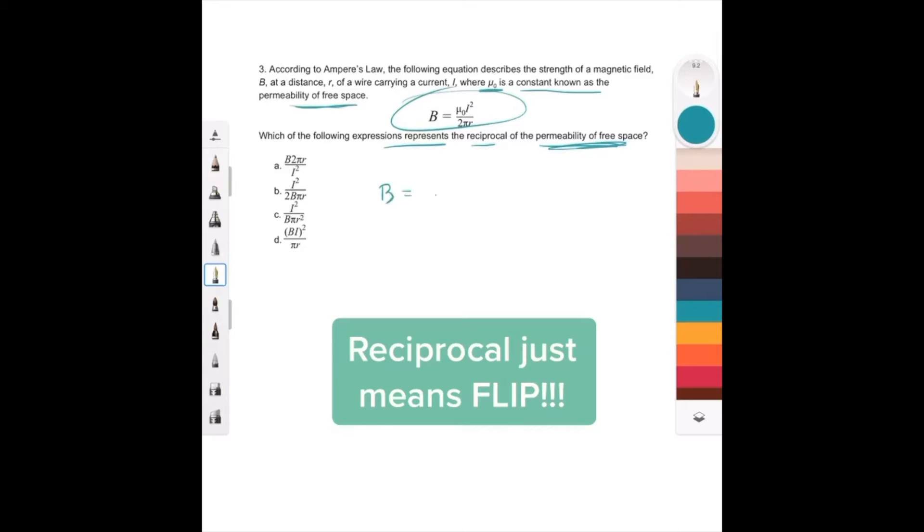B equals, that symbol is called mu, i squared over 2 pi r.